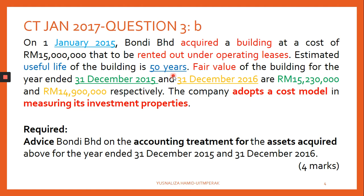The useful life of the building is 50 years. Pay attention here because the question states the company adopts a cost model. The fair value of the building was $15.23 million and $14.9 million at different dates, but if you adopt the cost model, changes in fair value will be ignored. Therefore, the IP building will be shown at cost less accumulated depreciation less any accumulated impairment loss — similar to MFRS 116 PPE cost model.